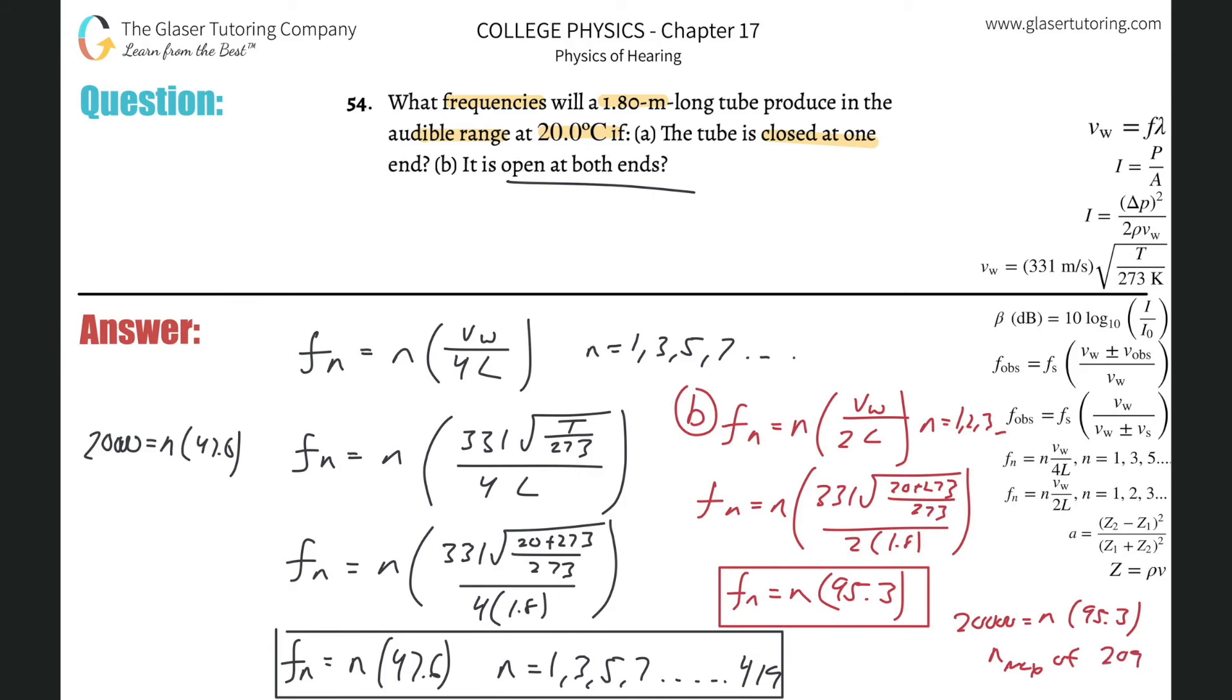So basically what we're going to have, again, 200 some odd frequencies here. The answer would be something like this: it would be f sub n would be equal to n times 95.3, where n can range from 1, 2, 3, all the way to 209. And there you go.